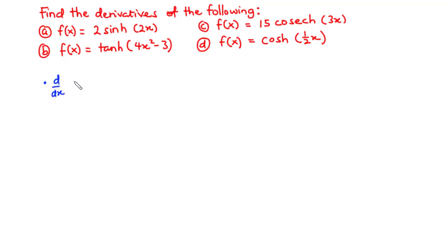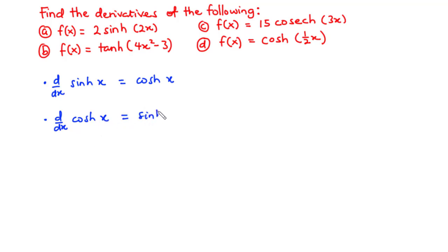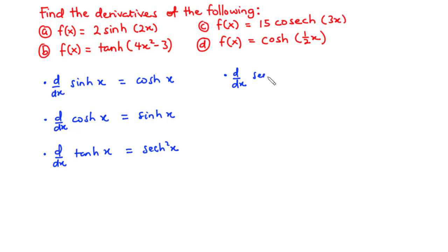The derivative of sinh x with respect to x is equal to cosh x. The derivative of cosh x with respect to x is equal to sinh x. The derivative of tanh x with respect to x is equal to sech squared x. The derivative of sech x with respect to x is equal to negative sech x tanh x.